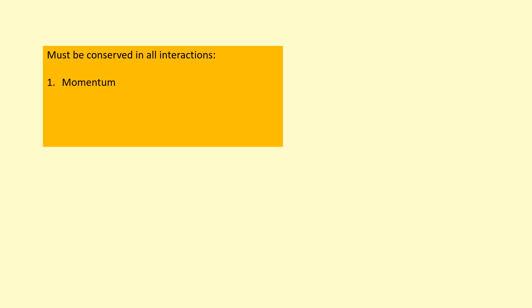Firstly, momentum — the total momentum before a particle interaction must equal the total momentum after the interaction, provided it's a closed system and we've accounted for all the different particles and there are no external forces coming in. Secondly, energy.